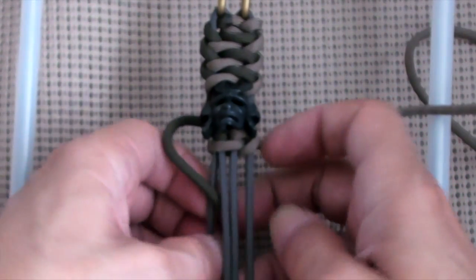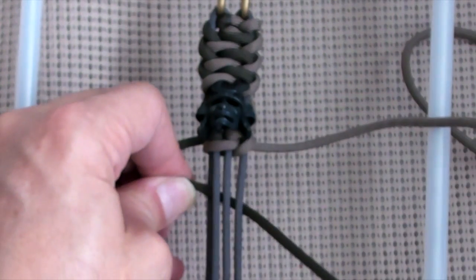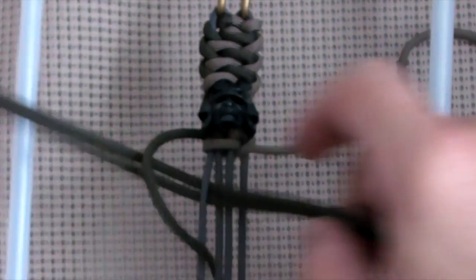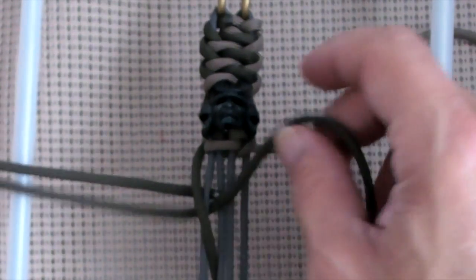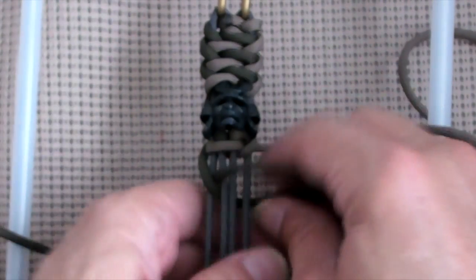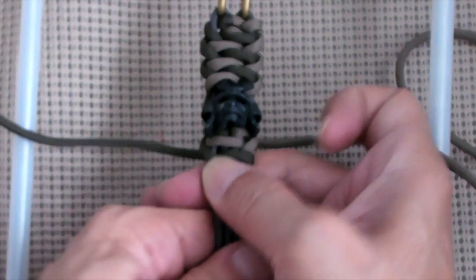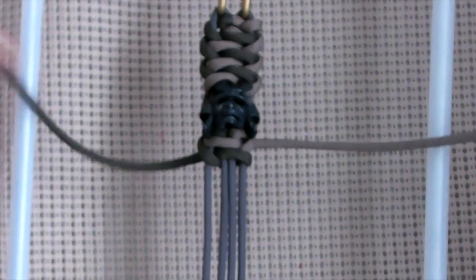Left strand, go down A. Come under and over. And then down A on the inside. Then you continue your knot.